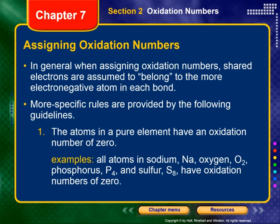More specific rules are provided by the following guidelines. We're going to go through eight rules, and it is your ability to use these rules that will determine how successful you are in this section. Number one: the atoms in a pure element have an oxidation number of zero. For example, all atoms in sodium (Na), oxygen (O2), phosphorus (P4), and sulfur (S8) have oxidation numbers of zero. It has to be that exact same element and nothing else.